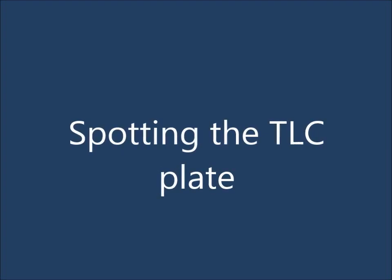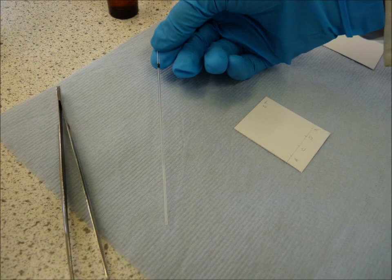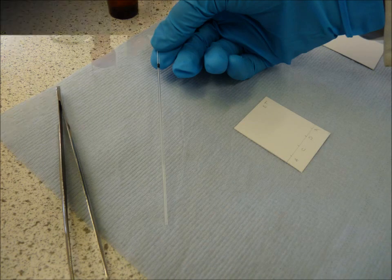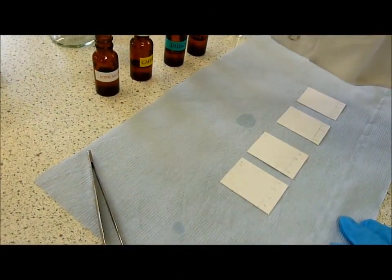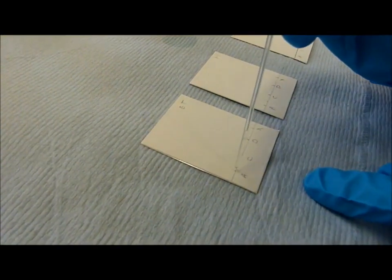Using a micro capillary tube, spot your compound onto the plate. The tube is fragile so please handle with care. Place the capillary tube into your first compound. Spot gently and quickly onto the marked position on each plate.